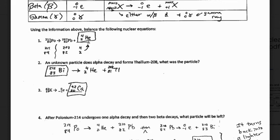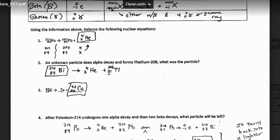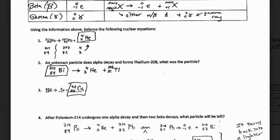Sometimes I'll refer to it kind of with words, and in such the case, an unknown particle does alpha decay and then forms thallium-208. What was the particle? Well, I gave you everything. There's your thallium-208, there's your alpha particle. So now we're going to work backwards and figure out, okay, the mass was 212, the charge was 83, so we actually started with bismuth-212 in this case.